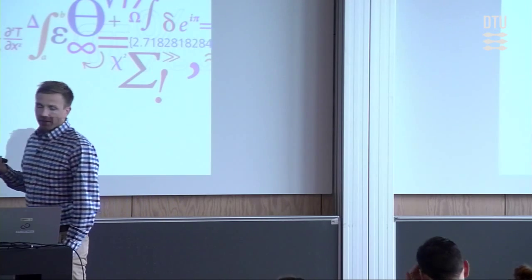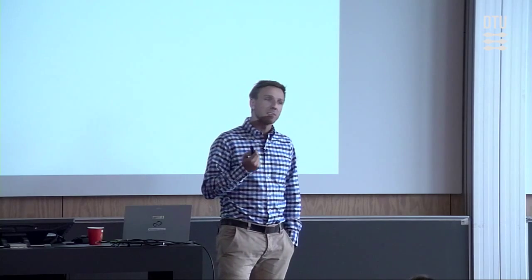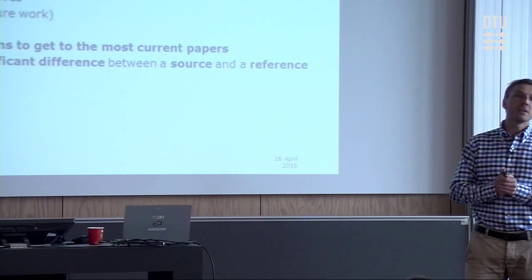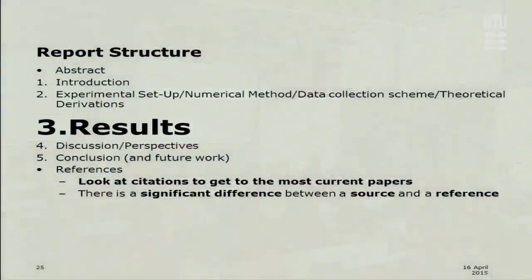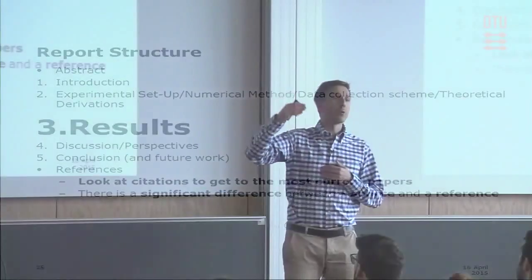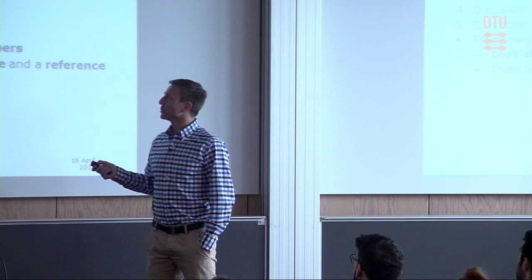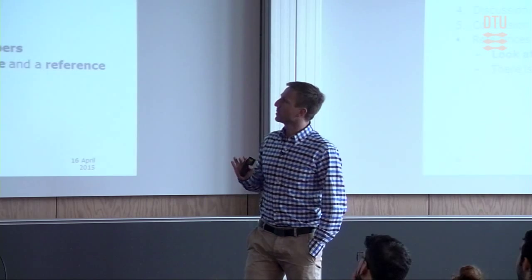When you've done and gotten results, you're going to write a report. The report structure is extremely easy: front page, abstract, introduction (chapter one), chapter two is experimental setup or numerical method, data collection scheme, or theoretical derivations. Chapter three — which is big — is results. If you don't have results, everything before and after is extremely difficult to write. Then you have discussions, perspectives, conclusion, possibly future work, and references — chapters one through five. That will always work.